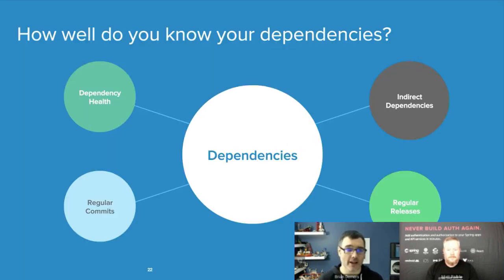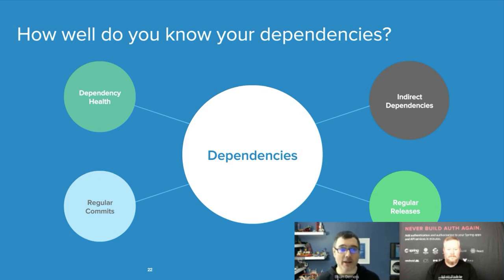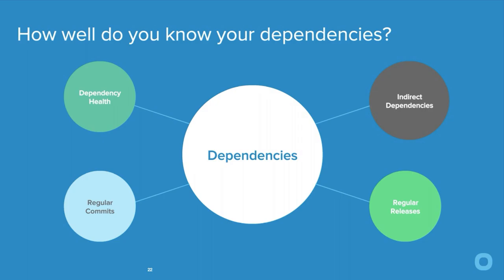How well do you know your dependencies? Are they healthy? Did you get them from a trusted source like Maven Central, or from a random Bitbucket repo you found on Stack Overflow? Some tips: make sure the project has regular commits, regular releases, an active mailing list or Slack where you can get help, and check whether the project itself includes questionable transitive dependencies. If any of those things raise flags, maybe you don't want to use that project — or jump in and help if it's open source.